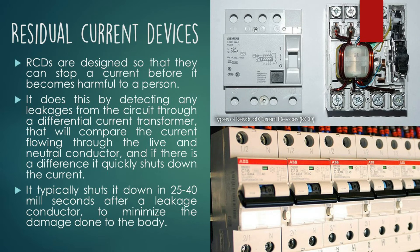And last, we also have the residual current devices. RCDs are designed so that they can stop a current before it becomes harmful to a person. It does this by detecting any leakages from the circuit through a differential current transformer that compares the current flowing through the live and neutral conductor, and if there is a difference, it quickly shuts down the current — typically in 25 to 40 milliseconds after a leakage — to minimize the damage done to the body.